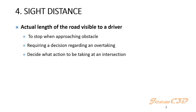Why do we need sight distance? There are mainly three scenarios. First, we need sight distance to stop the vehicle when approaching an obstacle — if you see an object on the road, you have to stop before hitting it. Second, in an overtaking scenario, you need to see the road ahead to confirm it is clear to overtake safely. Third, we need sight distance when approaching an intersection or junction, to decide whether to enter or wait until it is clear.